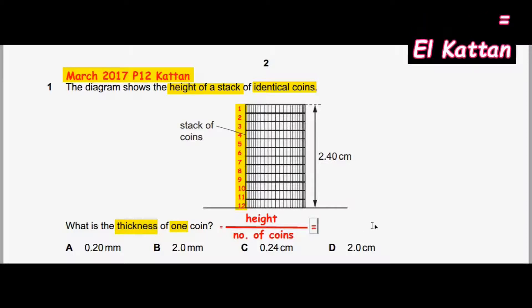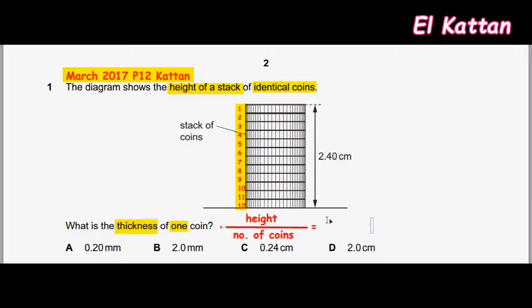Equals the height divided by the number of coins: 2.40 divided by 12 equals 0.2 centimeters. Converting from centimeters into millimeters: 0.2 times 10, so it is 2 millimeters.